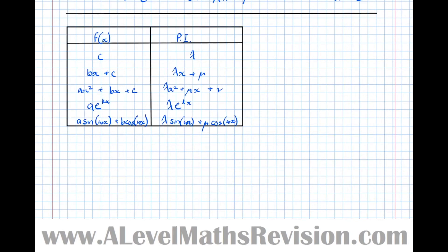Now let's look at various things that f(x) could be and the particular integrals they lead to. This is a table you have to learn. If f(x) is of the form c, the particular integral is just a constant. If it's of the form bx+c, the PI is of that form with constants λ and μ. A quadratic f(x) gives a quadratic PI; an exponential gives an exponential. For trig functions, even if f(x) is just sin(ωx) or just cos(ωx), you always get a combination of both sine and cosine terms in the particular integral — that's something to watch out for.